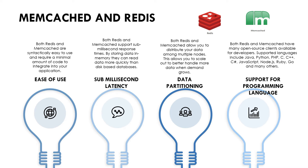The second commonality is sub-millisecond latency. AWS offers that both Redis and Memcached are fast and it could require less than a millisecond to get the response data back from them. The third one is data partitioning — both Redis and Memcached allow you to distribute the data among multiple nodes, allowing you to scale out to handle more data when demand grows. It is very easy to scale out and scale in your nodes in both Redis and Memcached.